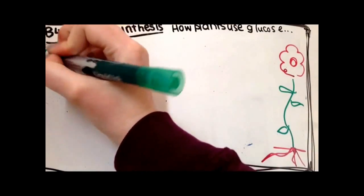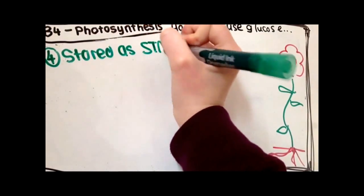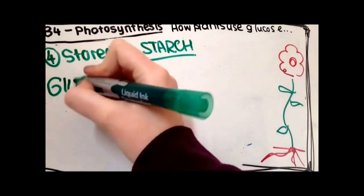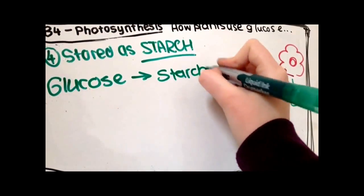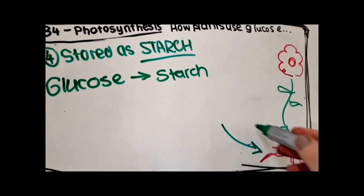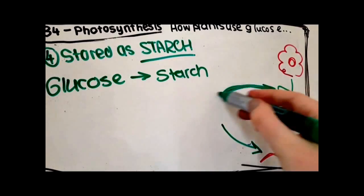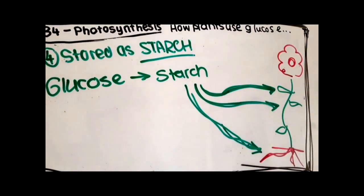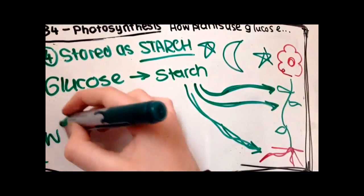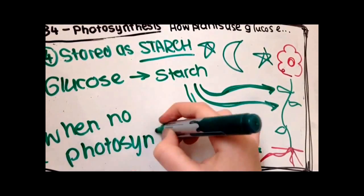Fourth, glucose is stored as starch. Glucose is turned into starch and stored in roots, stems and leaves. Glucose ready for use when photosynthesis isn't happening, for instance at night.